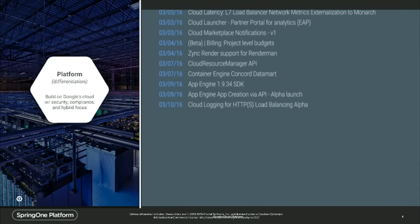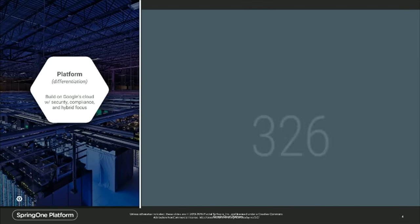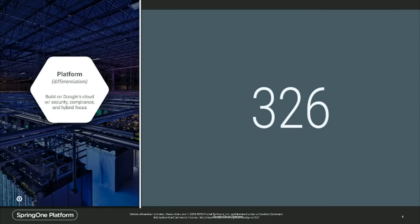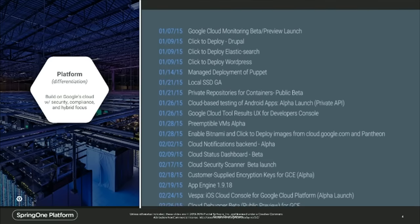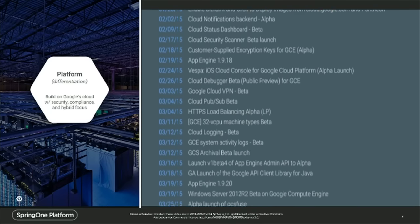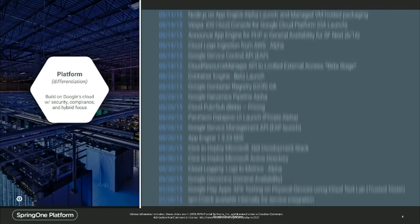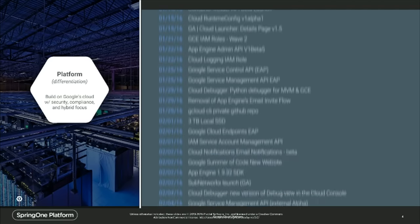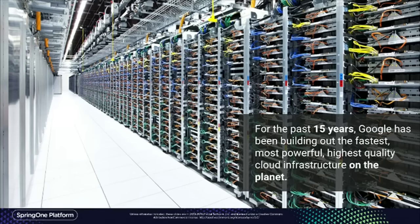Did anybody get a chance to check us out at the Google Code Labs? Stop by our booth — we're actually doing Code Labs where you can try some of this stuff out for yourself. You can get a Raspberry Pi if you complete four of the Code Labs. We're also doing big drawings every day for a Chromebook, so you actually get something at the end.